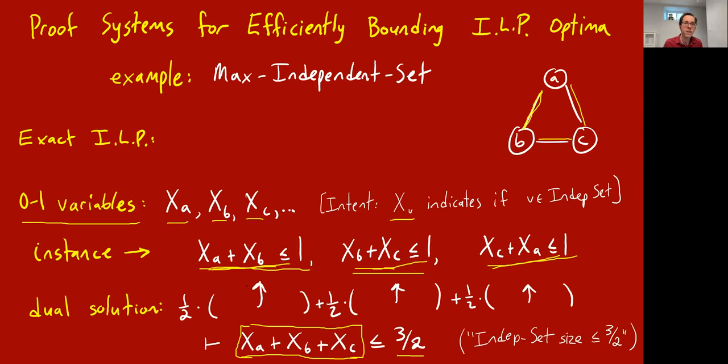Okay, and so these multipliers, this dual solution, if you will, are like a vivid proof that the max independent set size is at most three halves. Of course, it's actually at most one, but that's why it's a relaxation. It doesn't always give you the true integer optimum. I should mention, as always, if you have any questions while I'm going, you can pipe up or type them into the chat. I'll keep an eye on that and answer them as they come in.